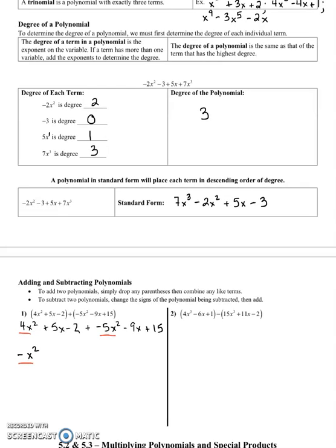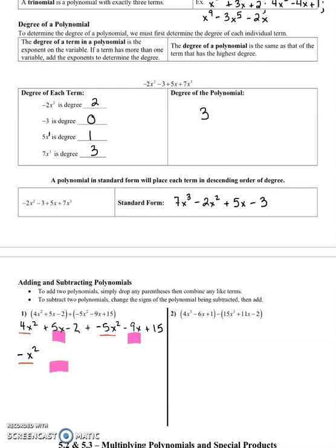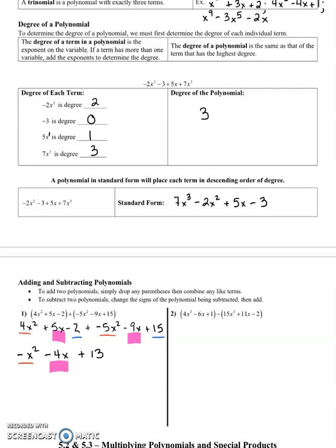Then we have 5x and negative 9x, which combine to give us negative 4x. And finally, combining the constant terms: negative 2 plus 15 gives us plus 13.